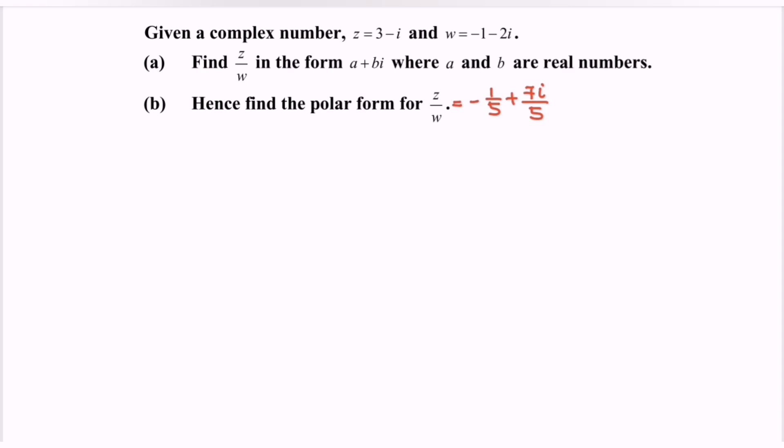For part (b), find the polar form for z/w = -1/5 + 7i/5. Step one: refer to the diagram. We need to determine the location of z/w. With -1/5 on the left and +7i/5 upward, the complex number is in the second quadrant.